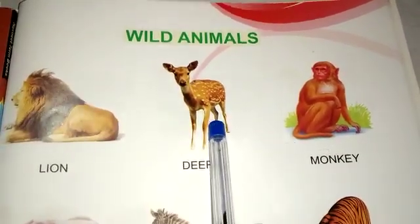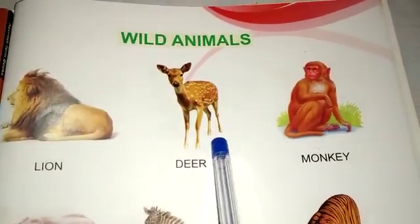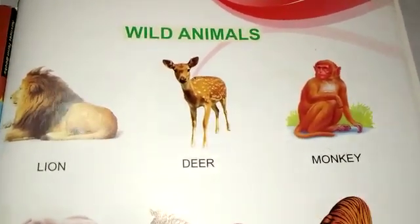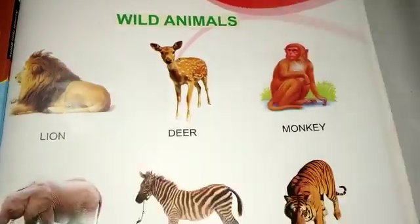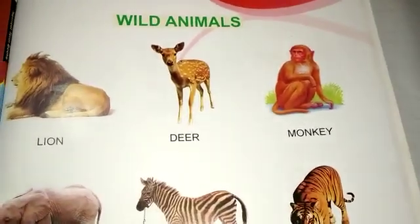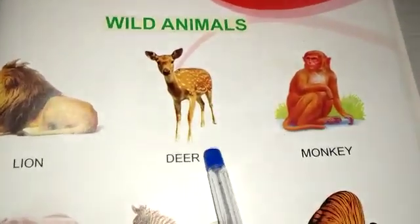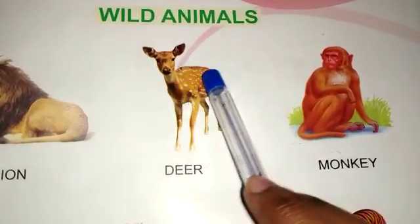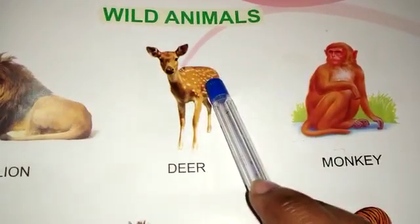What is this? This is a deer. What is this? This is a deer. These are white dots.